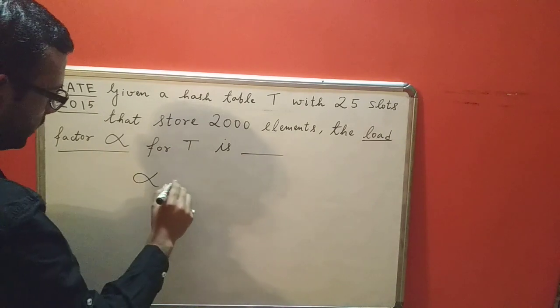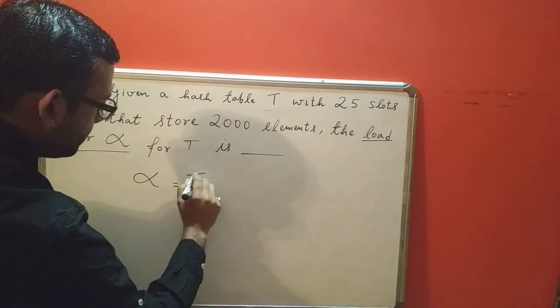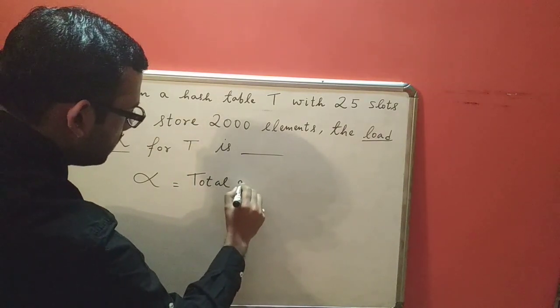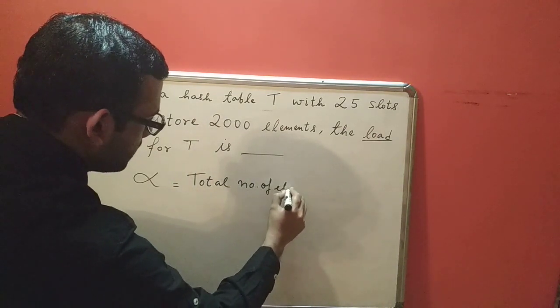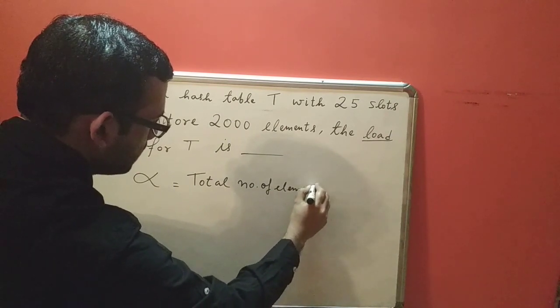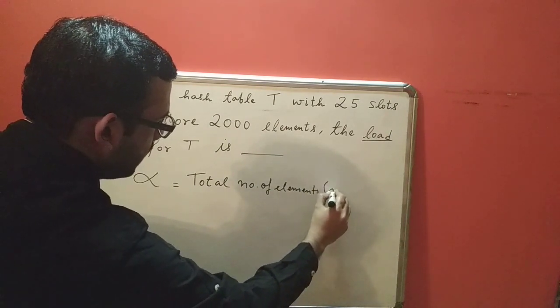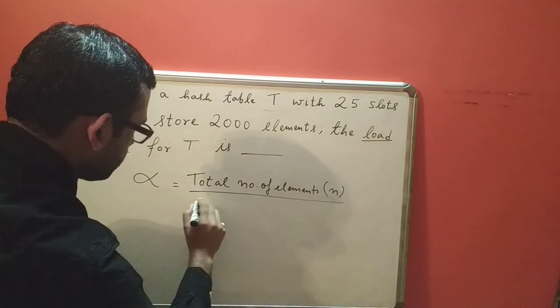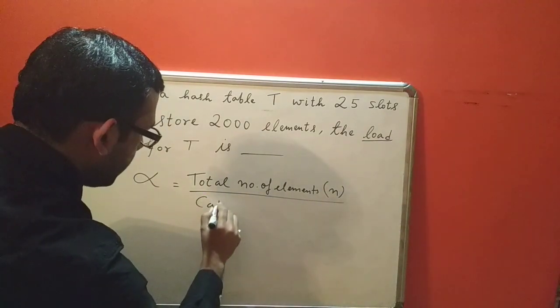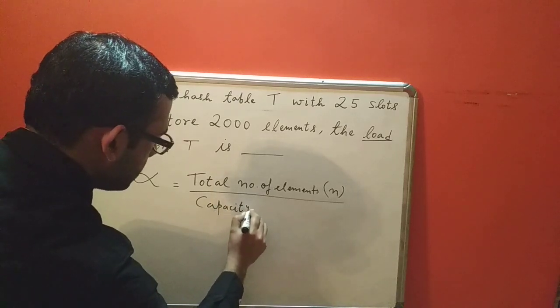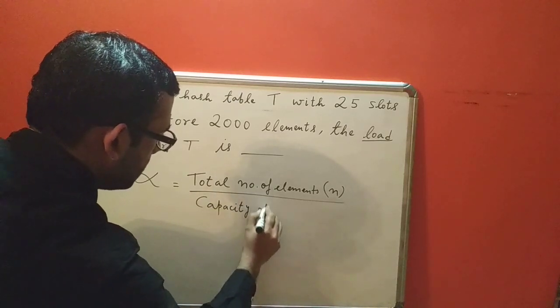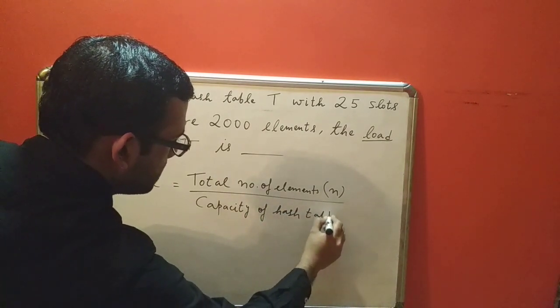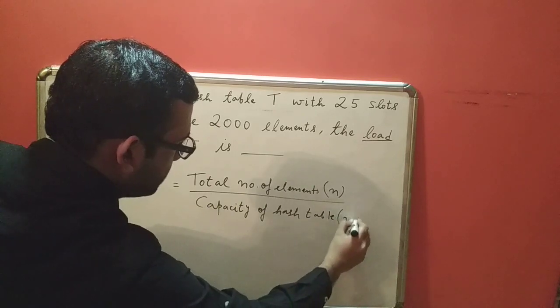Load factor is given by the total number of elements, often denoted by small n, divided by the capacity of hash table, and that is often denoted by M.